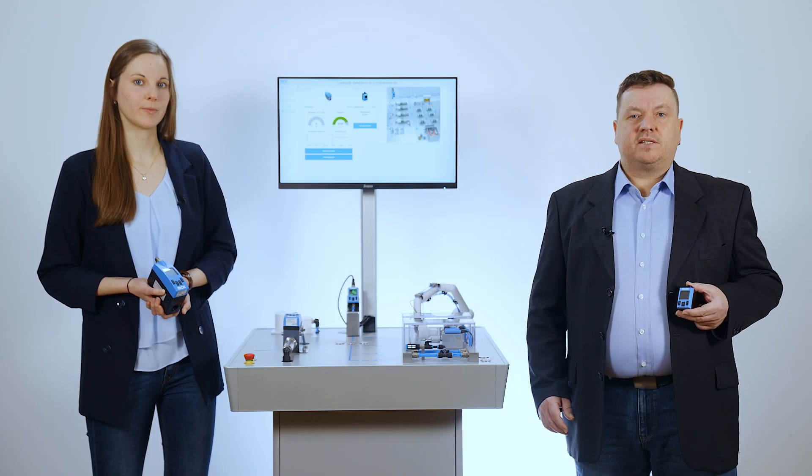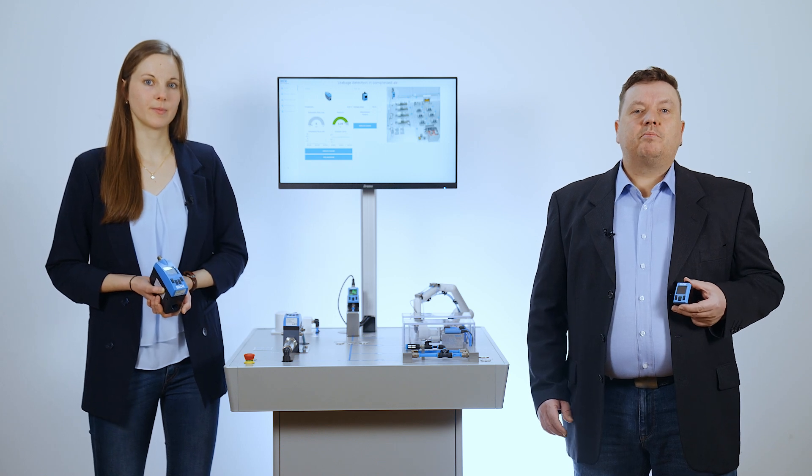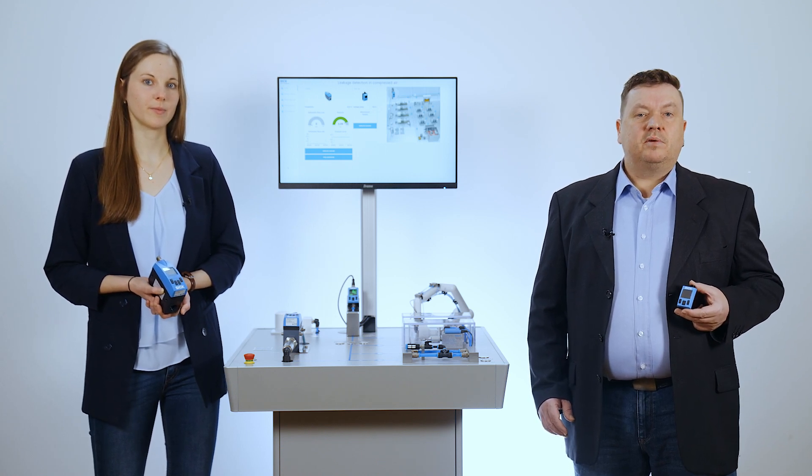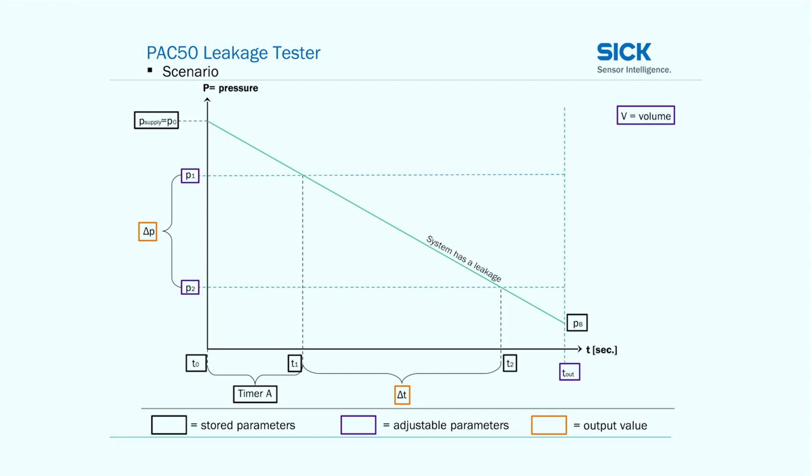Basically, the built-in sensor checks a pressure drop over a certain period of time in the leakage mode. The duration of the measurement up to the time out was programmed into the sensor for this purpose.